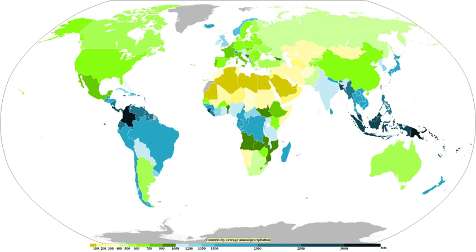The Mediterranean climate regime resembles the climate of the Mediterranean Basin, parts of western North America, parts of western and South Australia, southwestern South Africa, and parts of central Chile. The climate is characterized by hot, dry summers and cool, wet winters. A steppe is a dry grassland. Subarctic climates are cold with continuous permafrost and little precipitation.